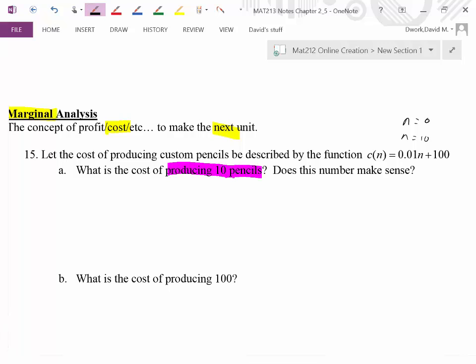So here we go, let's figure it out. The cost of producing 10 pencils would be 0.01 times 10 plus 100. So that's 10 cents plus $100, so it looks like it's $100.10 to produce 10 pencils. So far so good. Now do note we have not done any calculus yet.